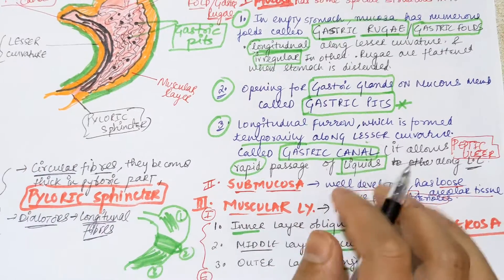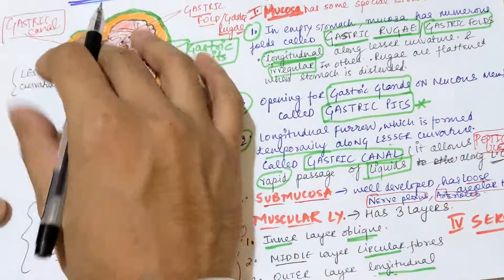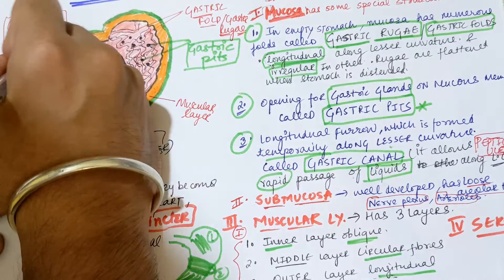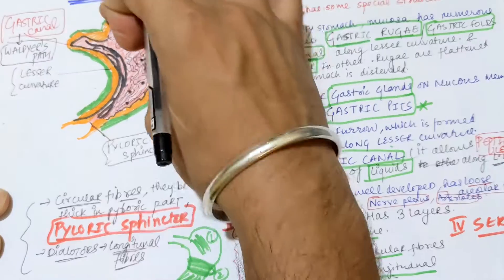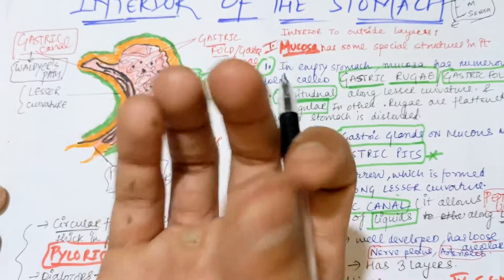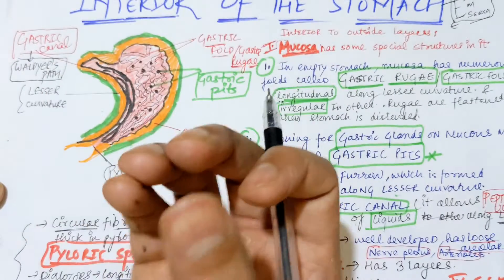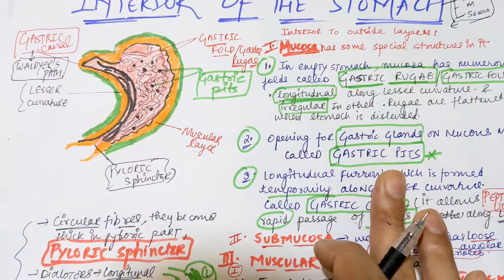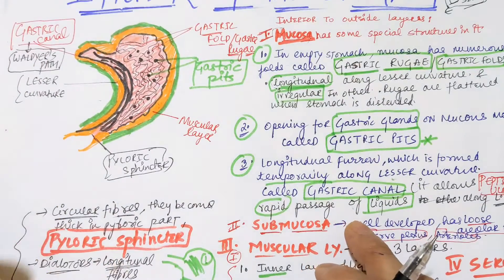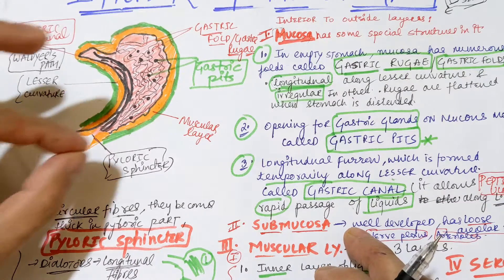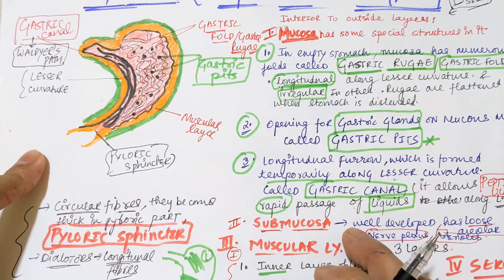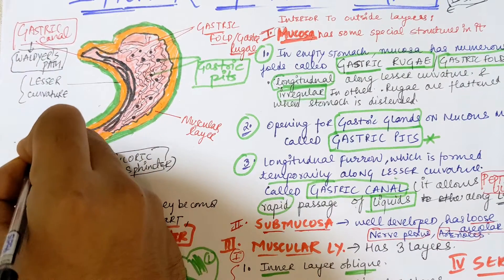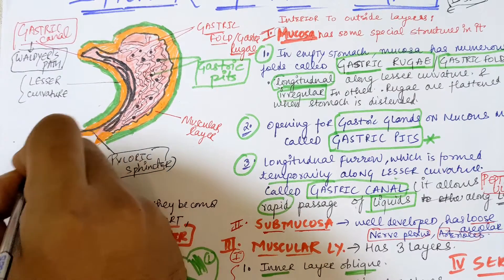The gastric canal is also called Waldeser's pathway, as found in some books. Along the lesser curvature, liquids pass rapidly; along the greater curvature, solid or pasty components — the bolus from the esophagus — pass through. So liquids travel via the lesser curvature and solid components via the greater curvature.